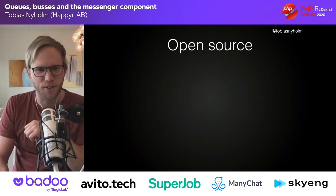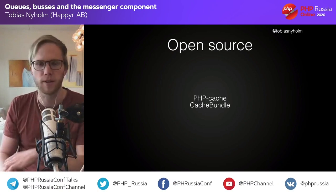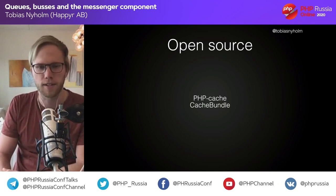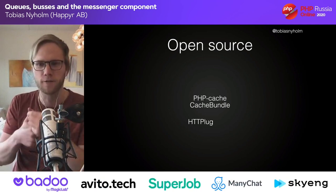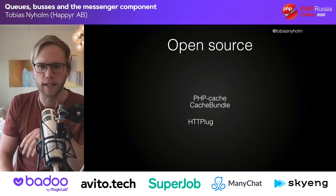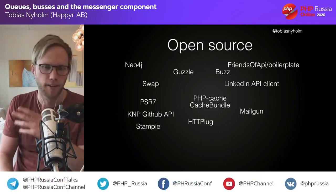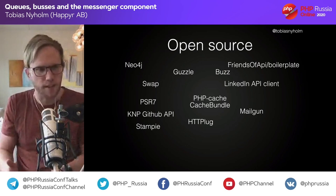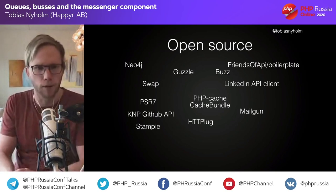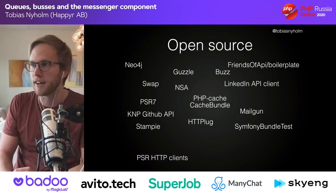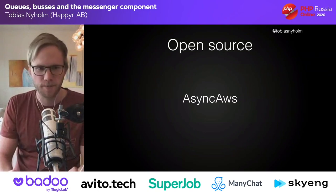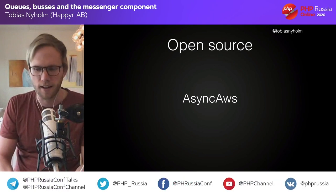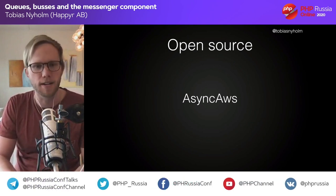I started my open source career in 2015. PSR-6 just came out, so me and a friend created PHP Cache. At the same time, I was interested in HTTP plug, which was an abstraction over the two major HTTP clients at the time — Guzzle 5 and Guzzle 6. I also wrote my own PSR-7 implementation after noticing that none of the existing implementations were 100% compliant. What I'm most interested in at the moment is Async AWS — a super thin and user-friendly AWS SDK. You can use it instead of downloading 20 megabytes of source code; with Async AWS you download about 500k.